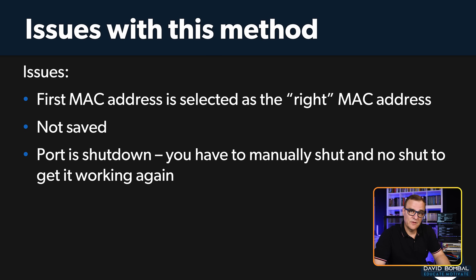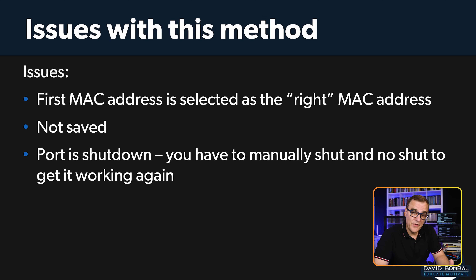Another problem: the first MAC address that's learned is determined to be the correct MAC address. The first device that connects is the device that's allowed — you're not explicitly configuring which MAC address is correct. As soon as another device sends traffic, the port is shut down. Also, the configuration is not saved: if the port goes down and a different device connects, that new MAC address becomes the allowed one. You may want to manually configure a MAC address or use sticky so that if the switch reboots, it still remembers which MAC address is permitted.